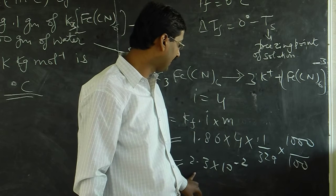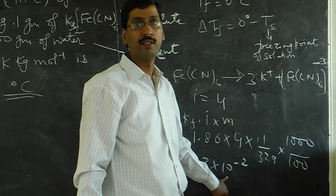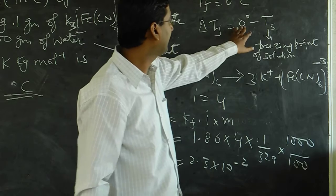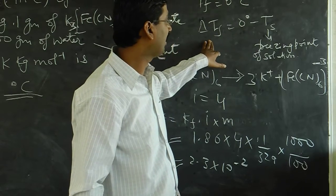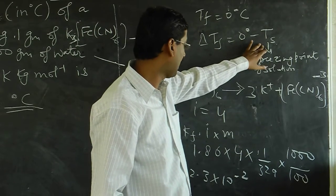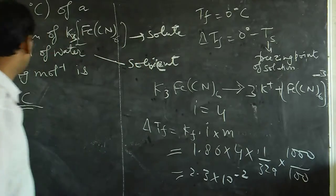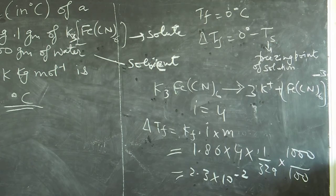So if you calculate this, then you have 2.3 times 10 to the power minus 2. And if you substitute here, you have the delta Tf value. So the delta Tf value is minus 2.3 times 10 to the power minus 2 degrees Celsius.